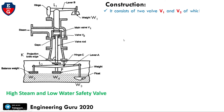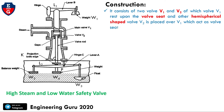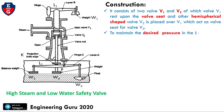Starting with the construction: it consists of two valves V1 and V2, of which valve V1 rests upon the valve seat. The other hemispherical shape valve V2 is placed over V1, which acts as the valve seat of valve V2. This maintains the desired pressure in the boiler.